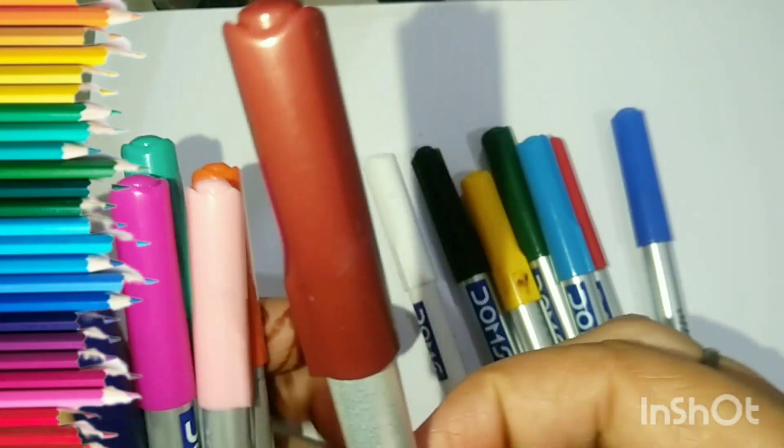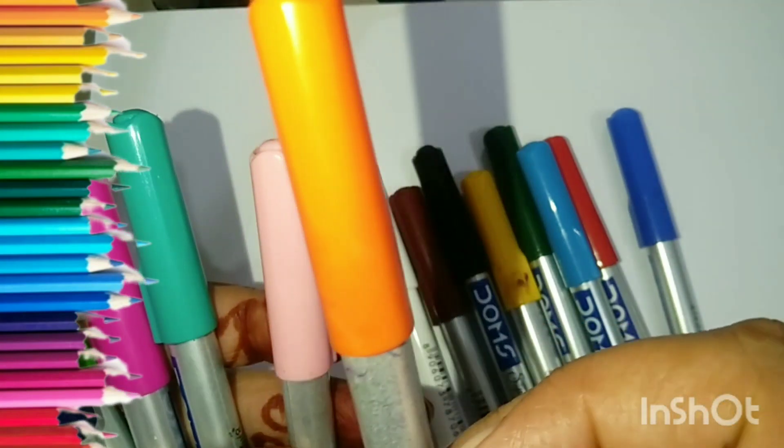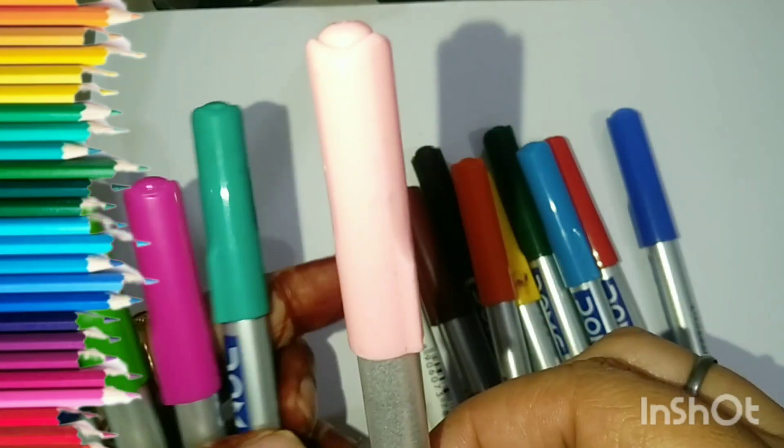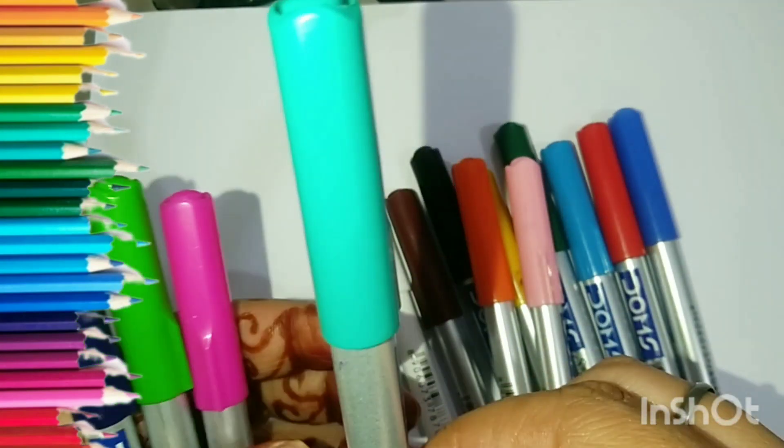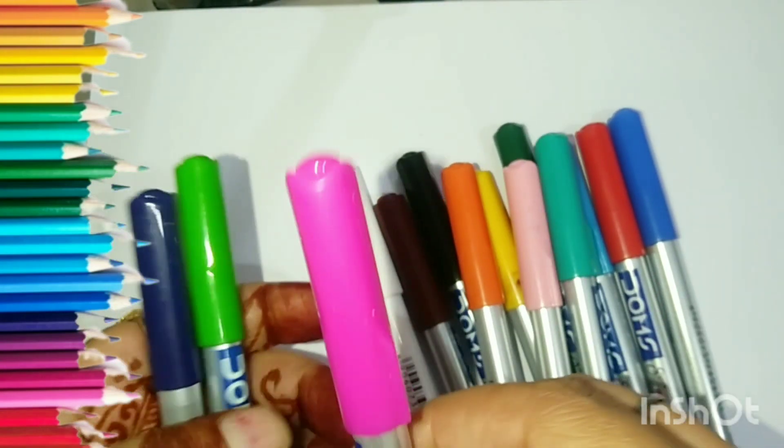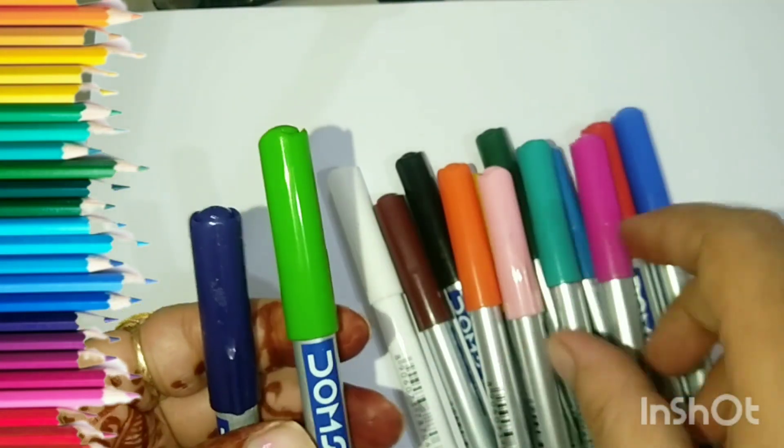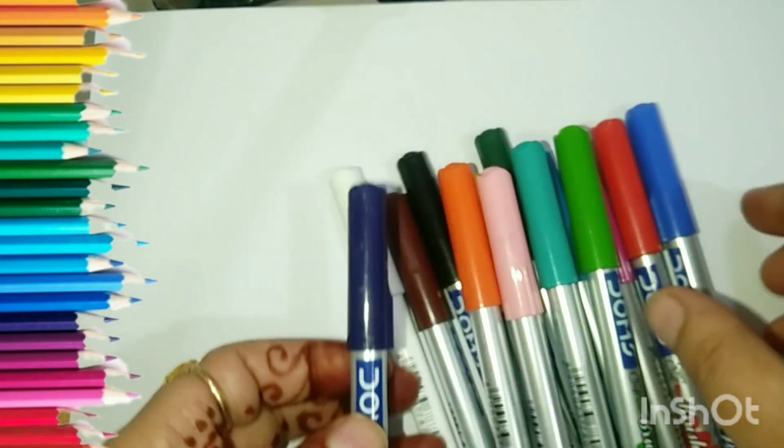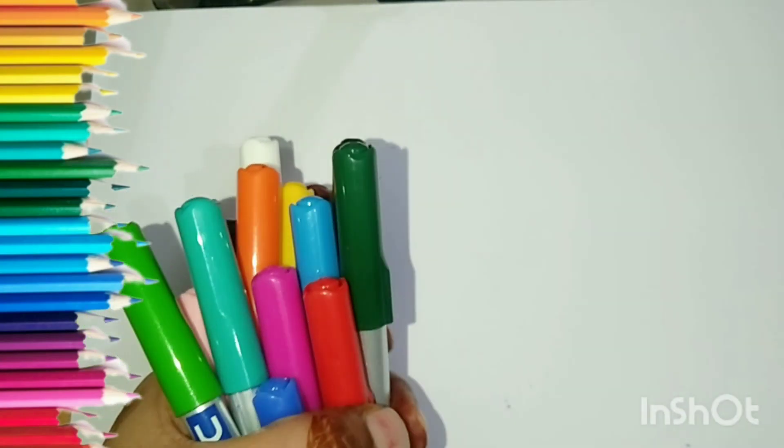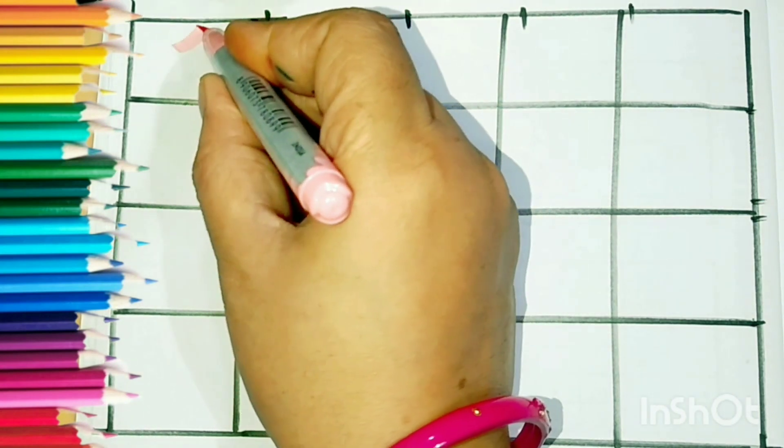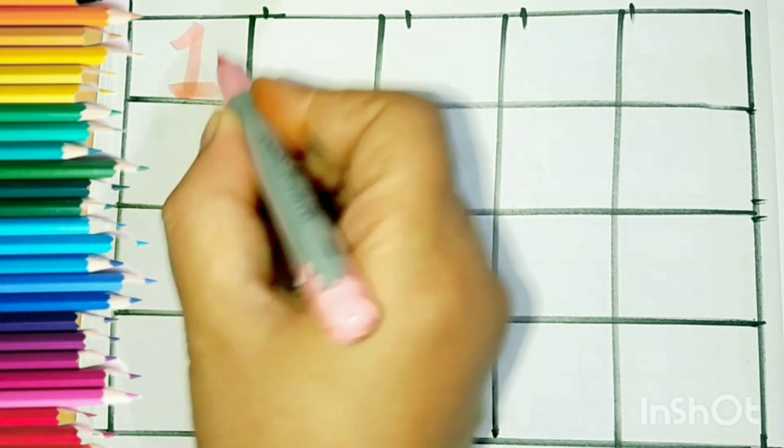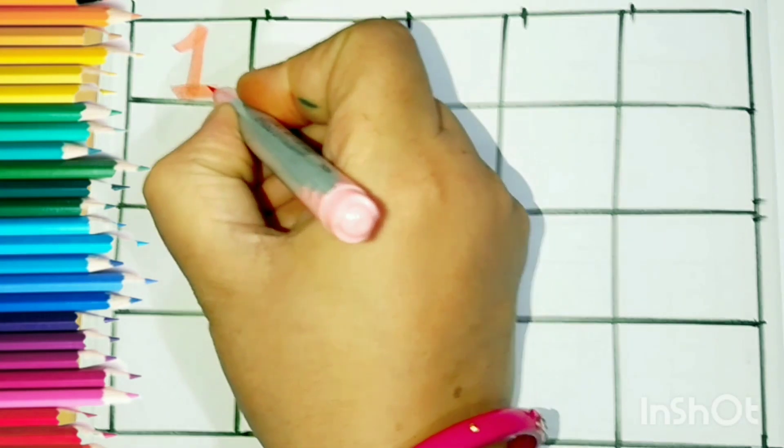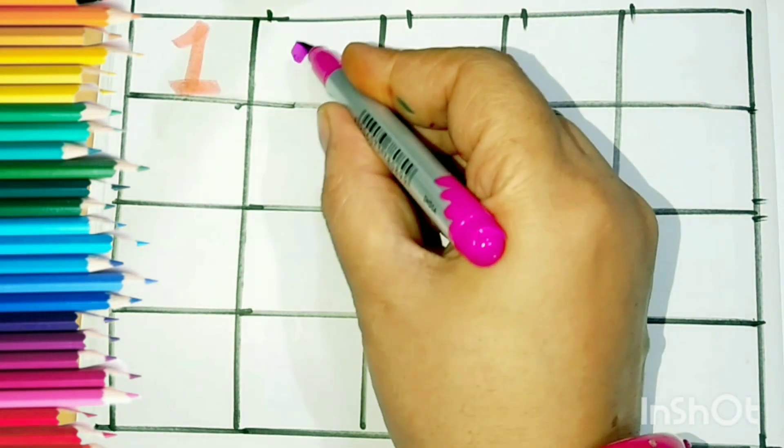Brown, orange, baby pink, sea green, pink, green, indigo. Now let us start the work. Start counting: 1, 2.